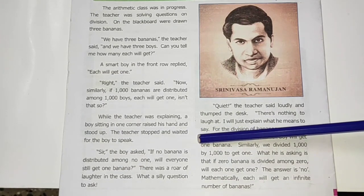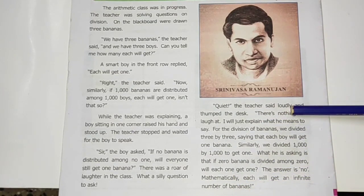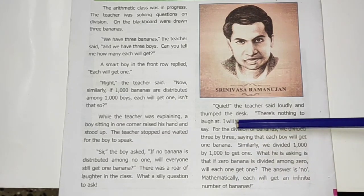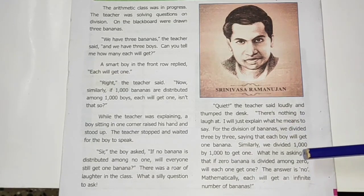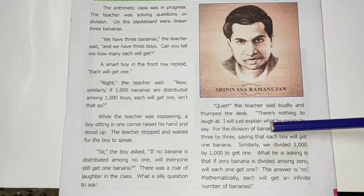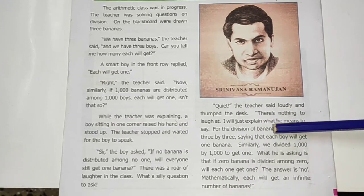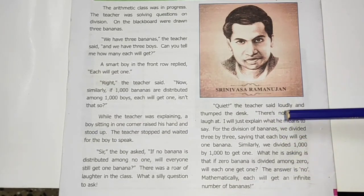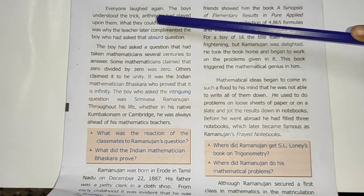On hearing this, the students started laughing and laughed at Ramanujan. The teacher controlled the students by patting on the desk and explained what Ramanujan meant by his question. If zero bananas are divided by zero, no one will get one — mathematically, each will get an infinite number of bananas. So zero divided by zero equals infinity. With laughter, the boys understood the trick of mathematics.